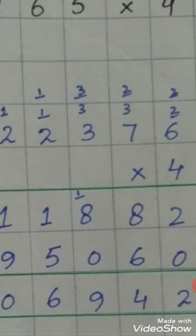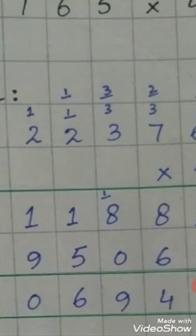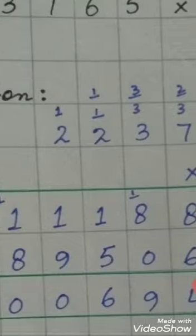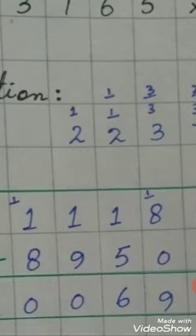4 times 3 is 12 plus 3 is 15, write 5, carry 1. 4 times 2 is 8 plus 1 is 9. And 4 times 2 is 8.